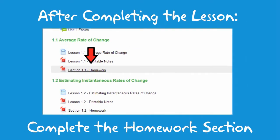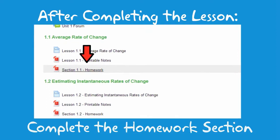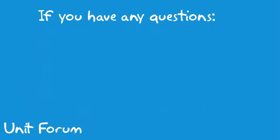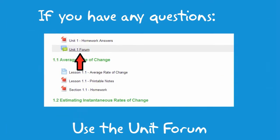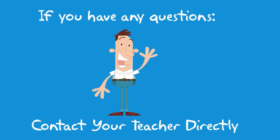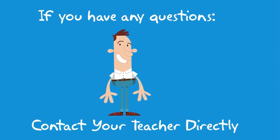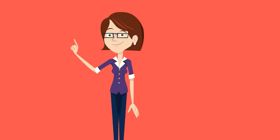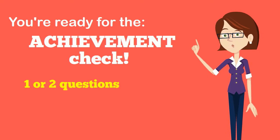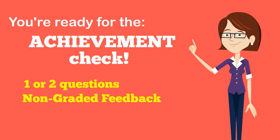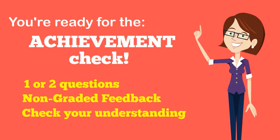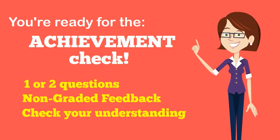After completing the lesson, you need to complete the homework. Remember to check your solutions. If you have any questions when working through the homework, use the unit forum or contact your instructor directly. After you have completed the homework, you're ready for the achievement check. The achievement check is one or two questions on the section that gives you non-graded feedback to check your understanding of the section.